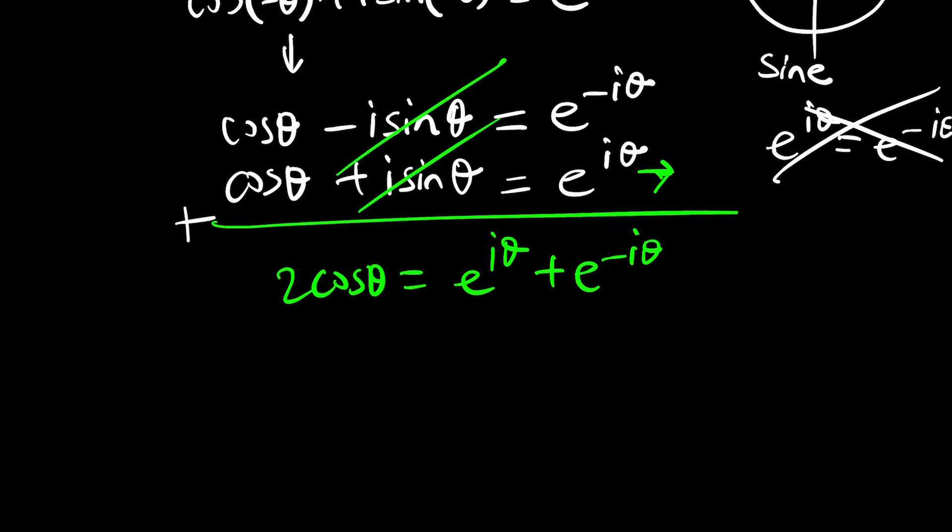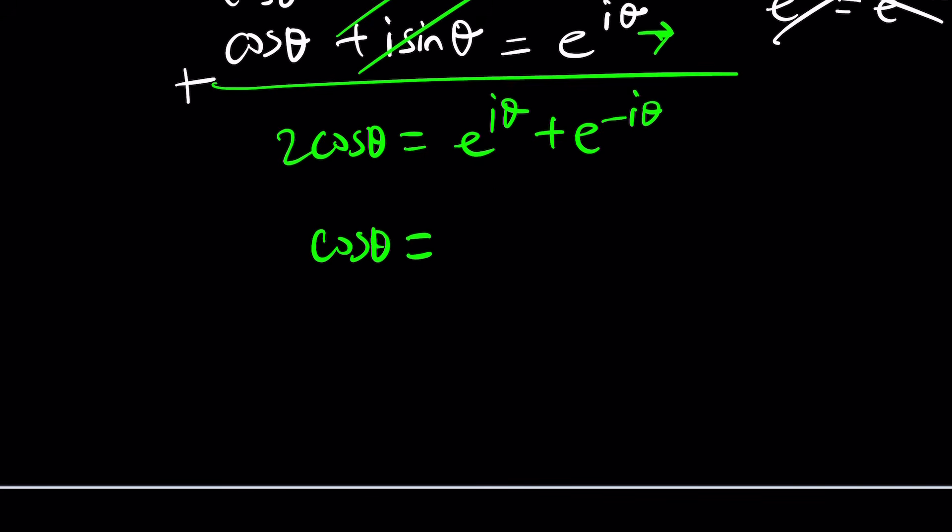And then, since I'm looking for cosine θ, I can divide both sides by two. This is the identity that I was referring to. I'm pretty sure you'll memorize it, because it's a shortcut, okay? It's good to know.